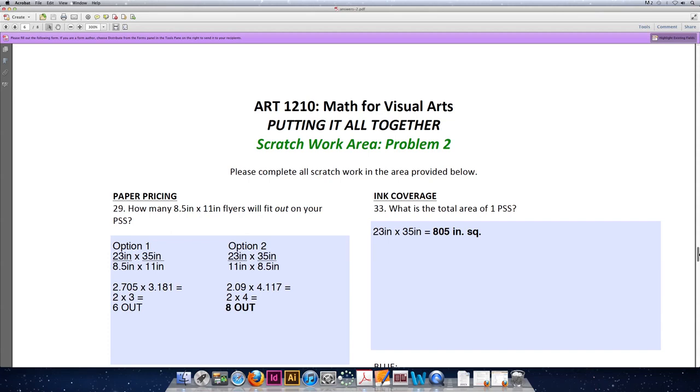Question 29: How many eight and a half inch flyers will fit out on your press size sheet? First you have to be able to recognize what the press size sheet is, and for our problem it's 23 by 35 inches. We'll divide that by eight and a half by 11, then we'll switch the bottom value as if we're turning the sheet of paper 90 degrees to see if we can fit more out that direction.